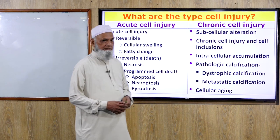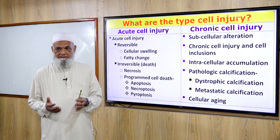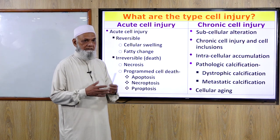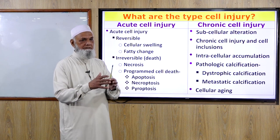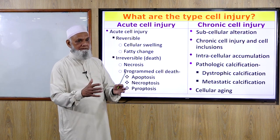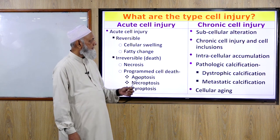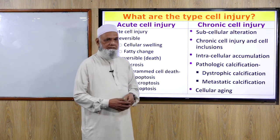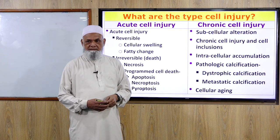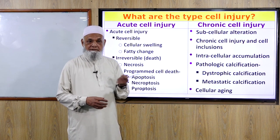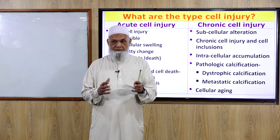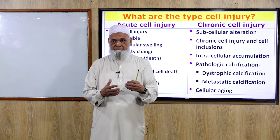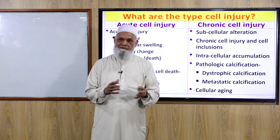Subcellular alterations involve the endoplasmic reticulum, mitochondria, and lysosomes as the principal organelles affected. Chronic cell injury and cell inclusions include brown pigment, lipid pigment, foreign substances, and undegradable substances — these represent accumulation and inclusion.